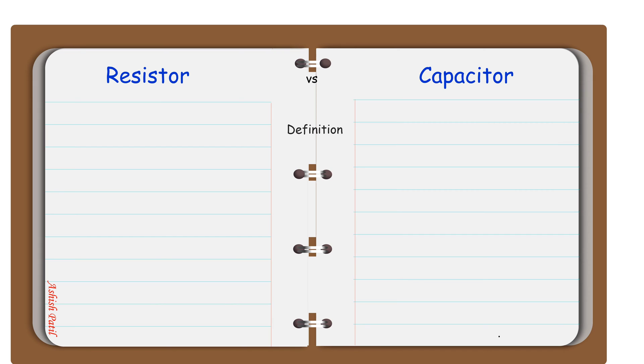Definition. A resistor is an electrical component used to restrict the flow of current in a circuit. A capacitor is an electrical component used to store electric charge in a circuit.